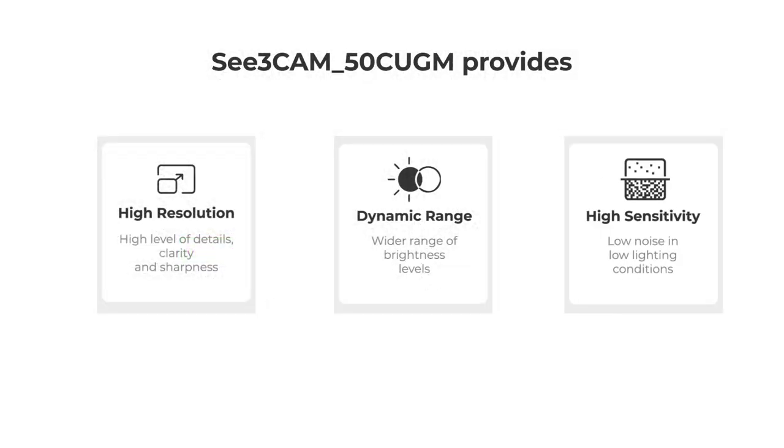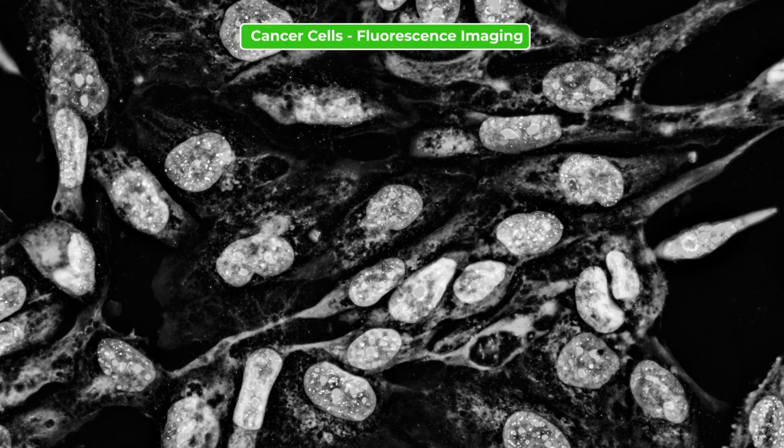The 50CUG's high sensitivity and low noise makes it a good choice for fluorescence imaging. The monochrome camera does not have a color filter and allows signal detection across wavelengths, thus increasing the overall sensitivity of the camera. The low dark current helps in applications which image at long exposure periods.